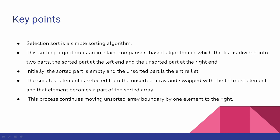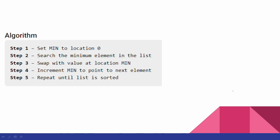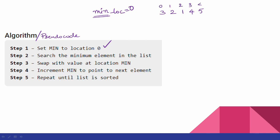Next, key points. This video covers the algorithm and pseudocode. The algorithm is simple. First, set the minimum location to the initial index, which is zero. Search the minimum element in the list. For example, array: 3, 2, 1, 4, 5 with indices 0, 1, 2, 3, 4. The minimum element is 1 at index 2. The minimum location stores the index of the minimum value.